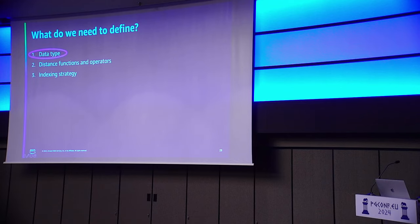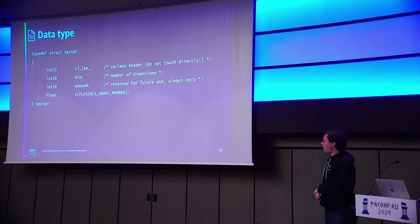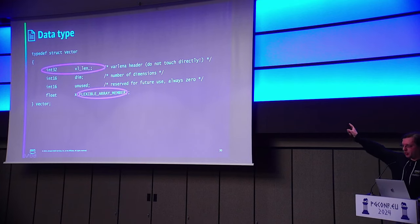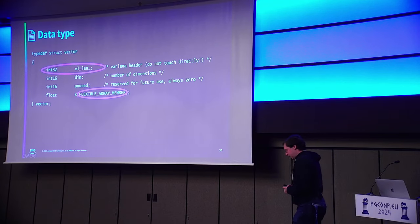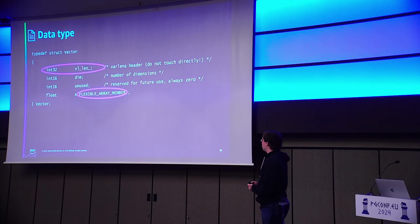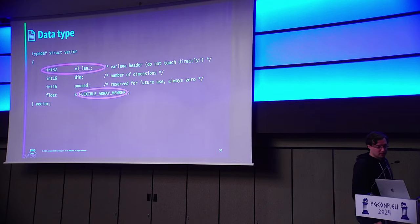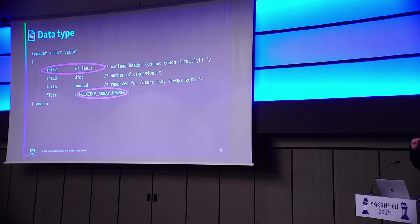First, we need to implement a data type. A vector data type is very straightforward — it's effectively an array of a number of dimensions, and you've got to store the number of dimensions. You see this thing up top: v_lin_something. This is actually part of leveraging Postgres infrastructure — it basically allows you to store variable amounts of information. This is known as the Toast infrastructure. Now you know how to implement a data type that is Toastable.